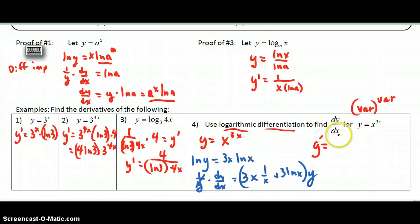And I don't want to leave this in terms of y, so in the end, I want y prime or dy dx is equal to, those x's cancel, so this is 3, plus 3 ln x, that whole thing, times my y. Well, my y is this right here, so I end up with x to the 3x. And so that's my final answer. So use logarithmic differentiation when we have a variable to a variable.